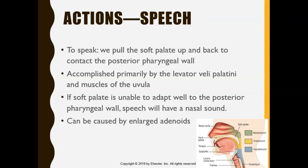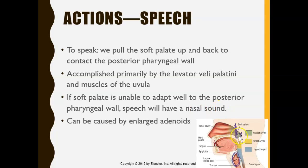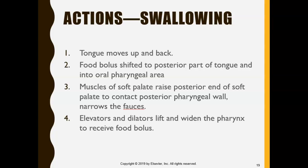When we're speaking, the soft palate goes up and back — we may not notice this, but it does happen. The levator veli palatini and the muscles of the uvula help do this. 'Levator' means to elevate, so this muscle lifts up the soft palate so that we're able to talk. If these muscles don't work properly, our speech will have a nasal sound, so the muscles need to work properly for good speech.